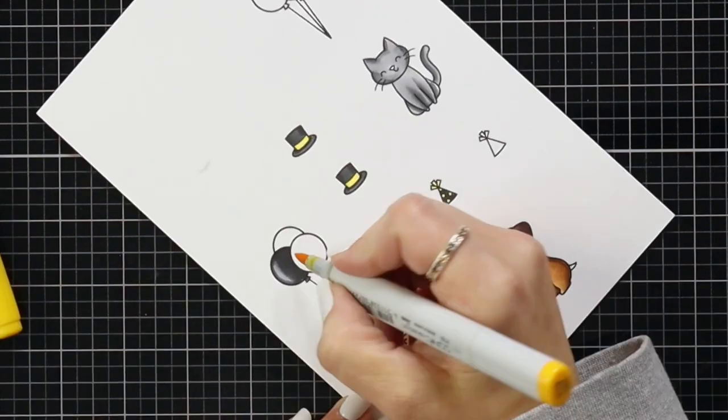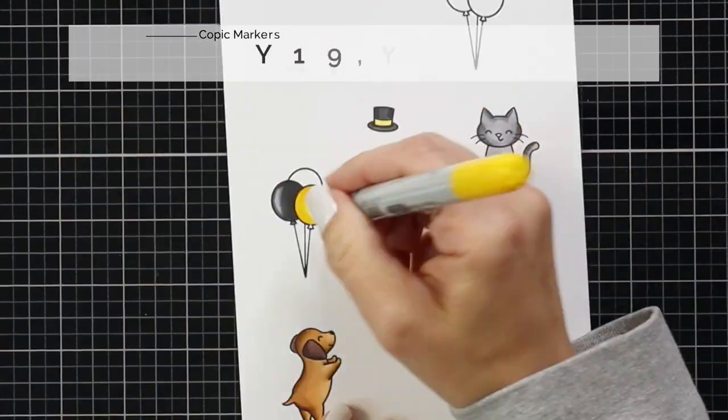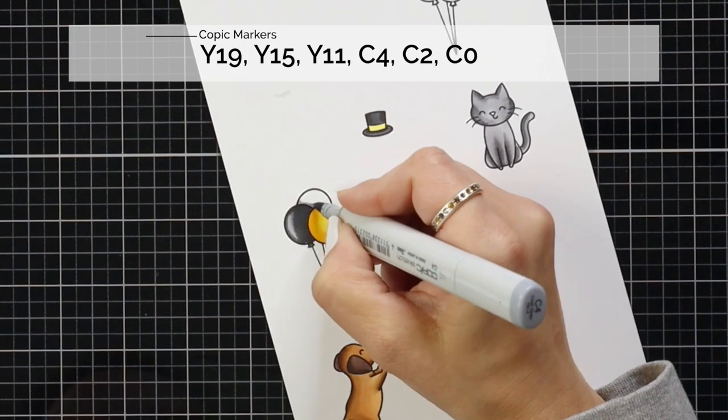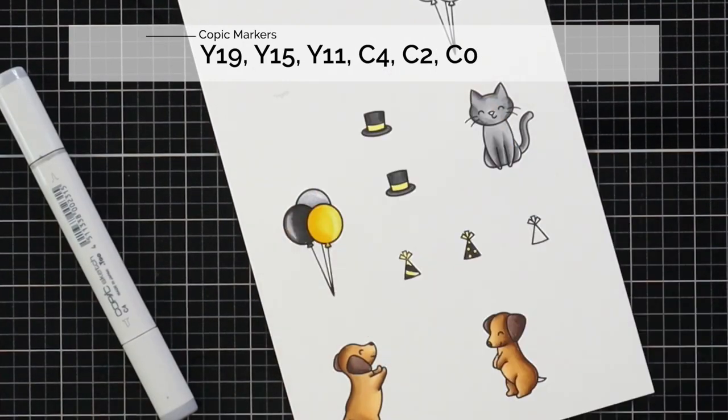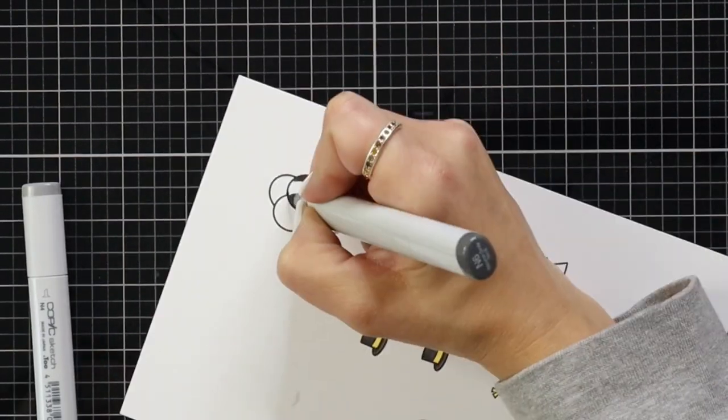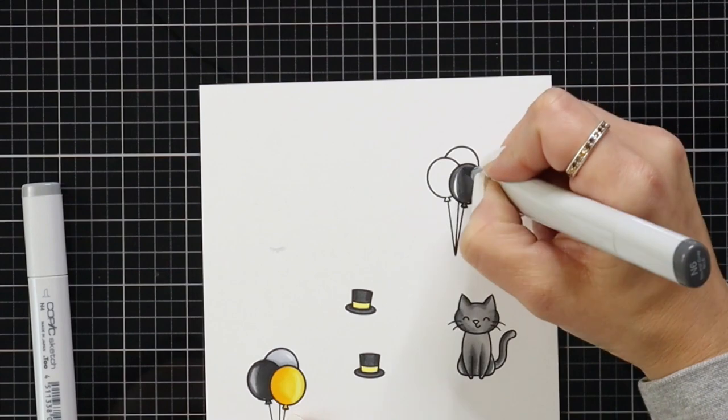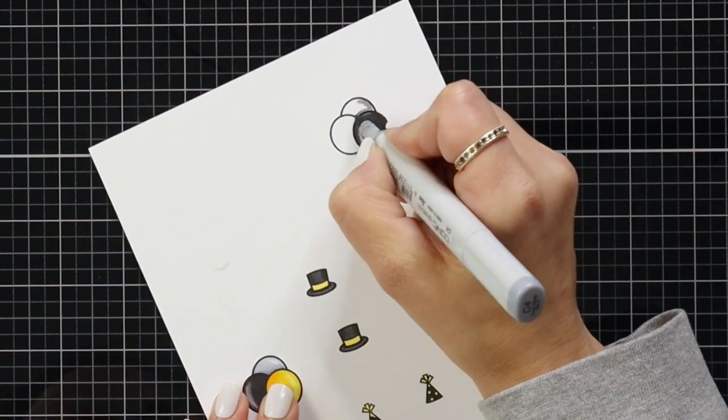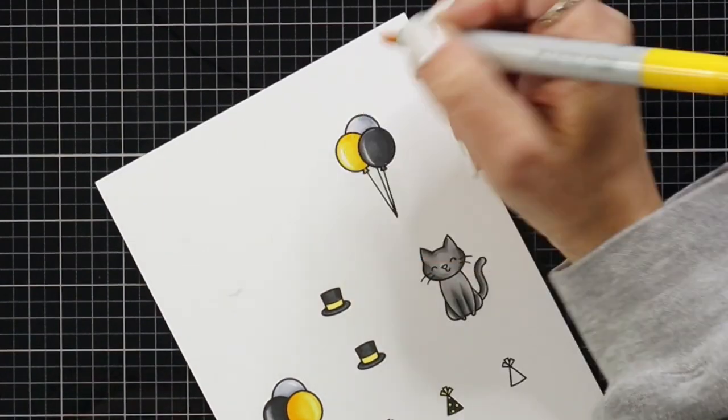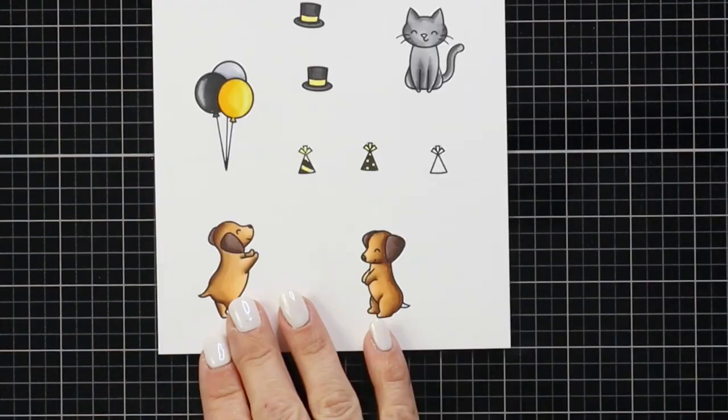For my balloon I have N9, N6, and N2 making sure to leave that little highlight area for the balloons. For yellows I have Y19, Y15, and Y11. And for my other balloon I wanted it to kind of look like a silver balloon so I did some cool grays with C4, C2, and C0.